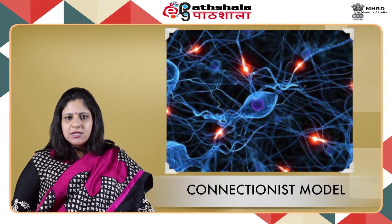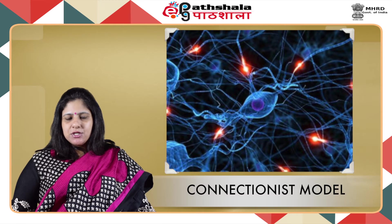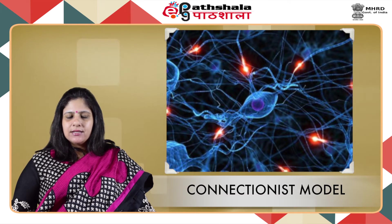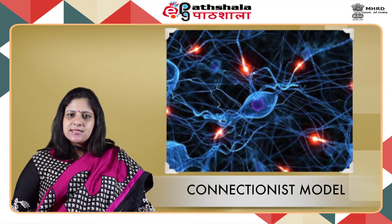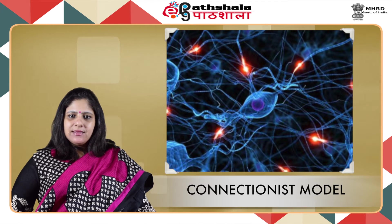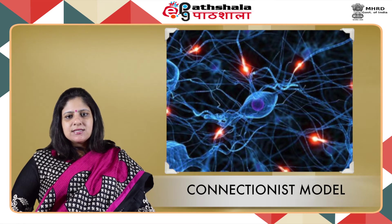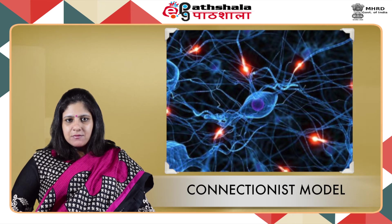The connectionist model is an alternative approach to the more traditional information processing approach. Connectionism aims to capture fundamental cognitive processes as they might be instantiated by the brain. Neurons are the elementary units of the brain, interconnected with each other. Connectionist networks are models of neural networks as they might exist in the brain. The two basic connectionist ideas are that information can be broken down into elementary units or neurons, and that there are connections between these neurons of different strengths. A connectionist connection is only possible if both neurons are firing at the same time.